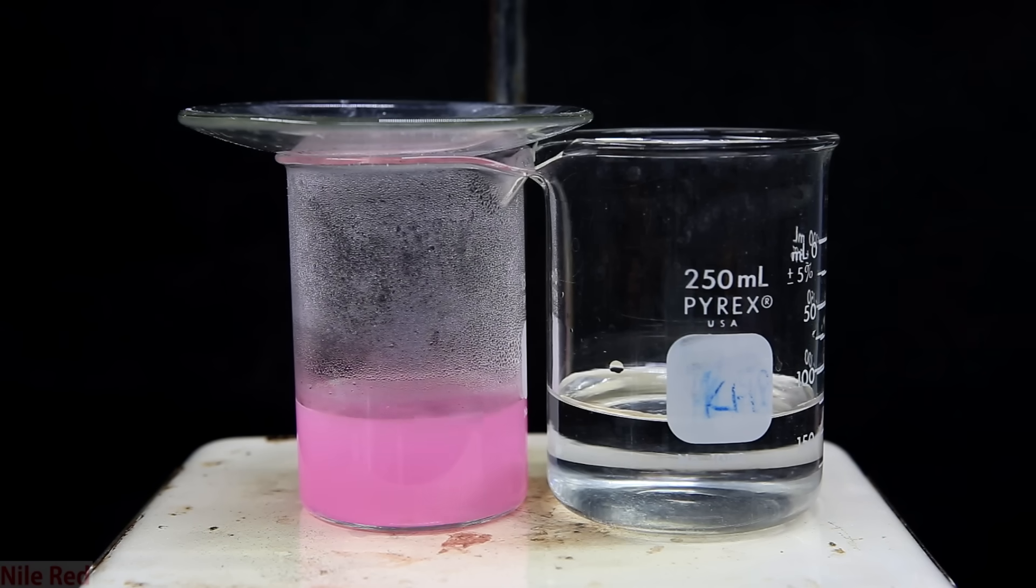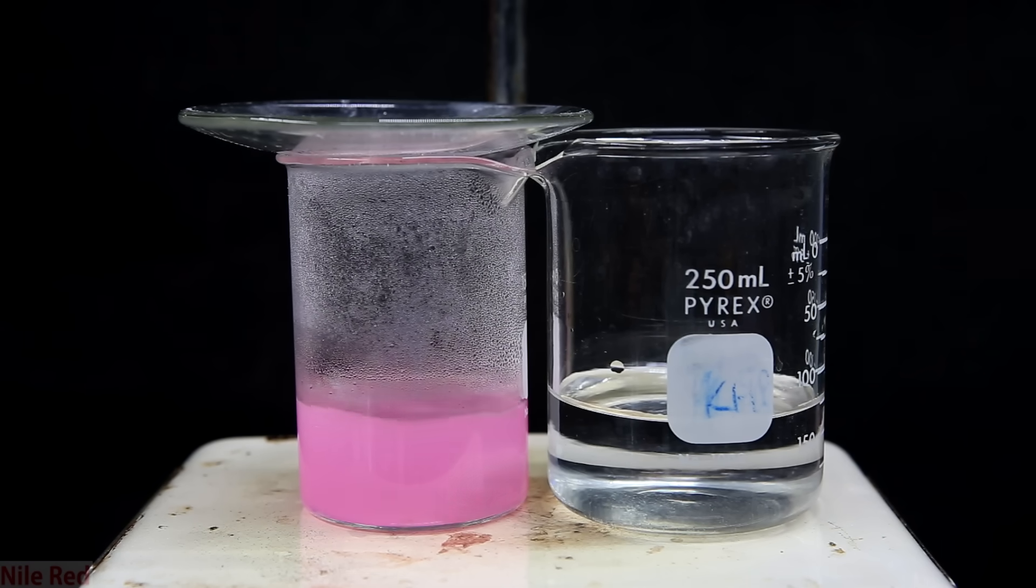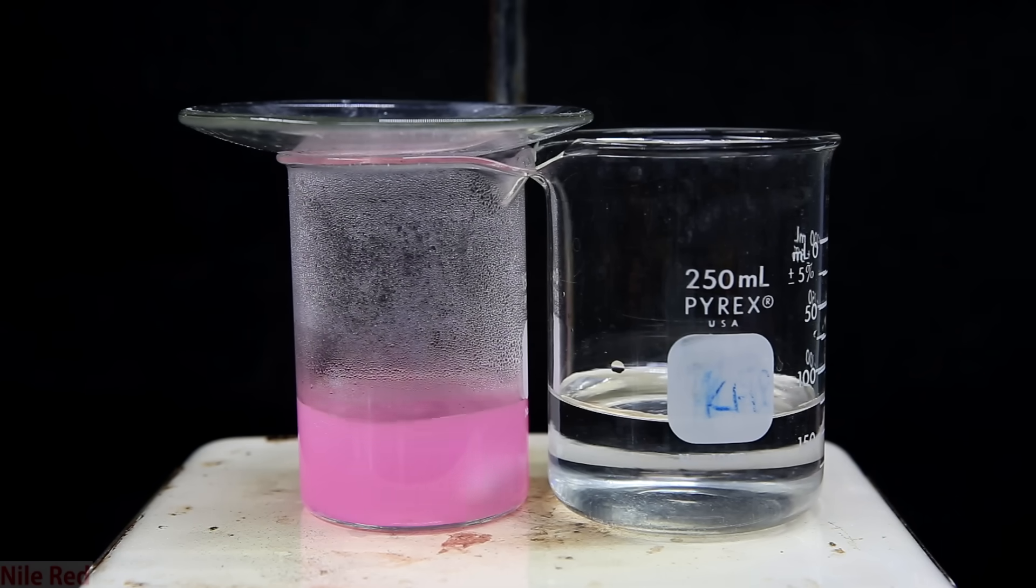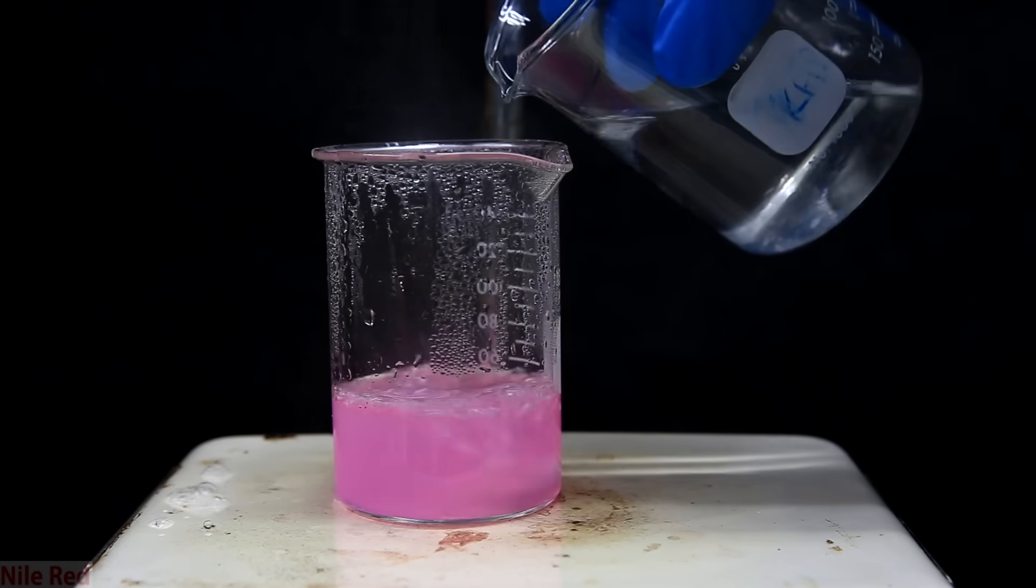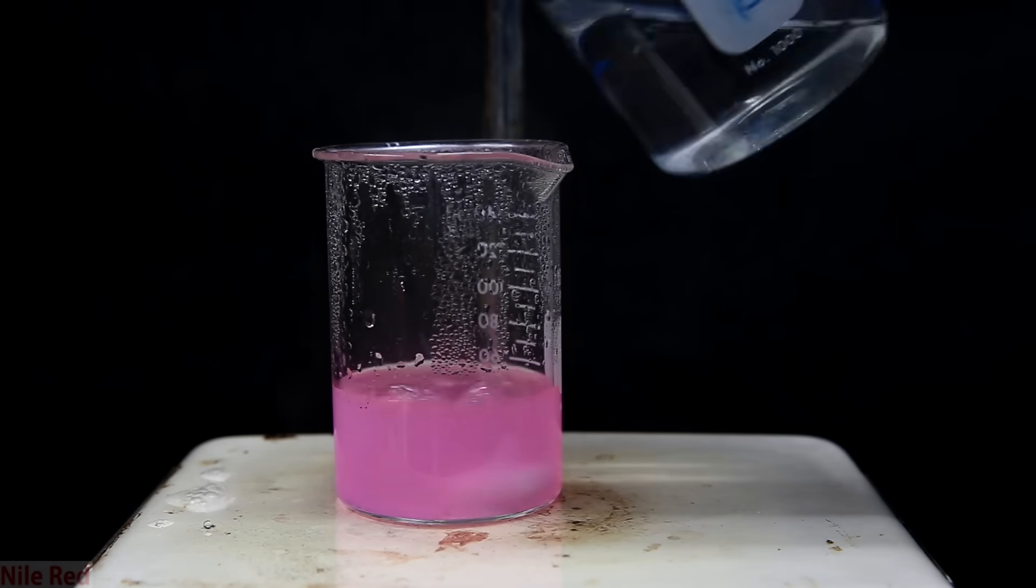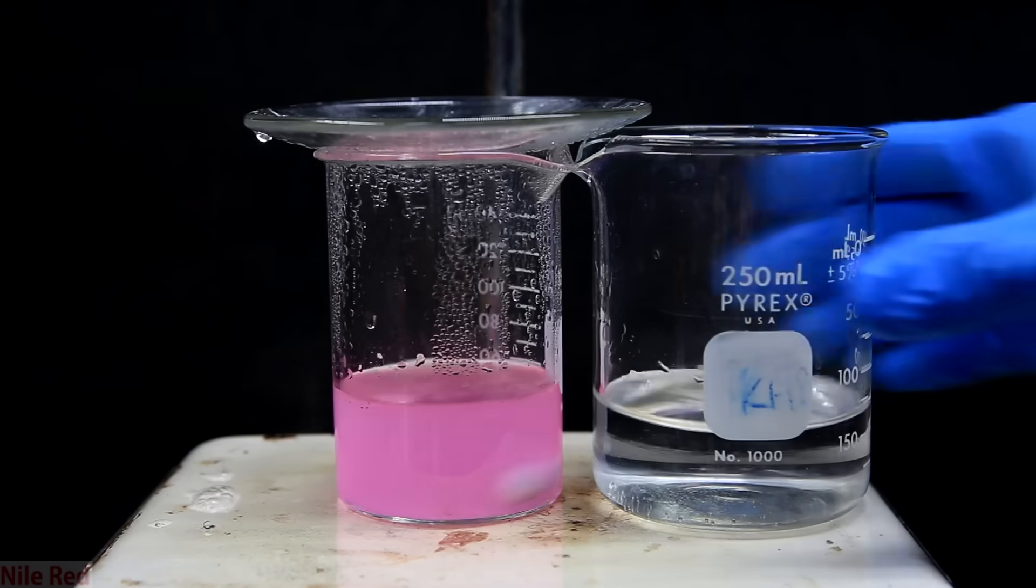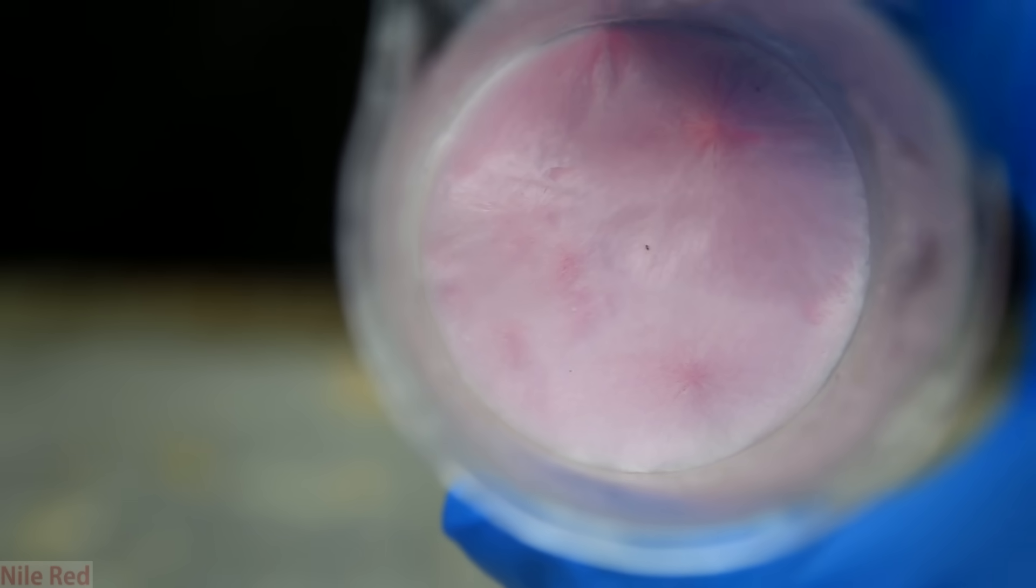I keep adding hot water until the solution more or less clears up and then I take it off the hot plate and let it cool to room temperature. Once it's at room temperature, we can put it in the freezer to crystallize out as much caffeine as possible. After taking it out of the freezer, we're left with something that looks almost exactly like cotton candy.